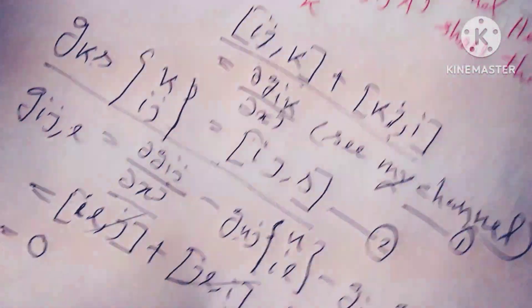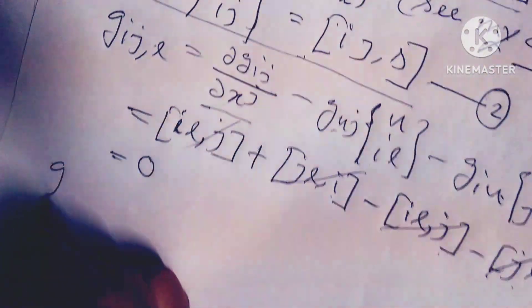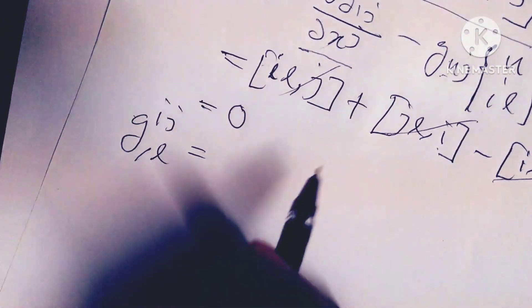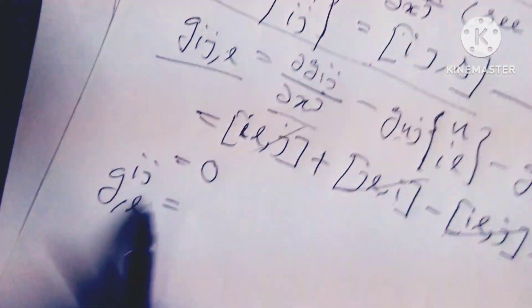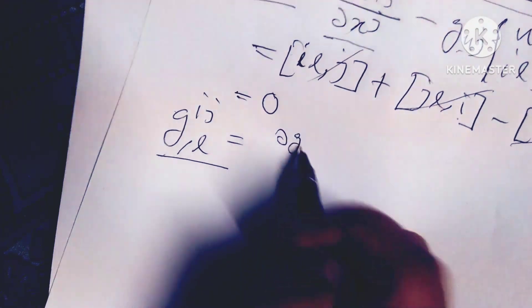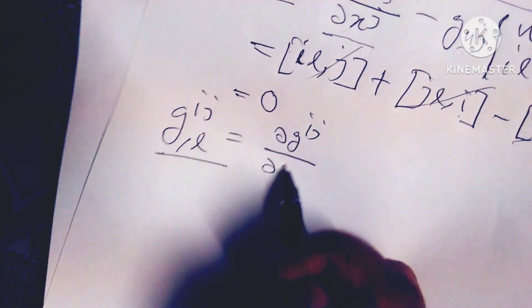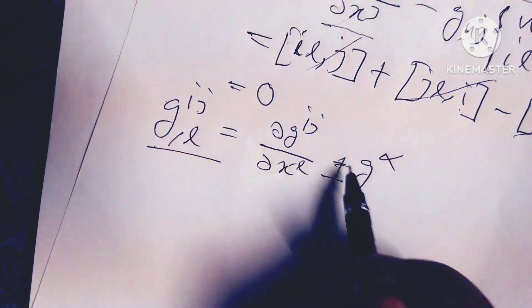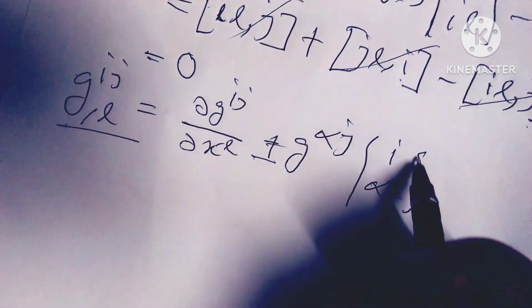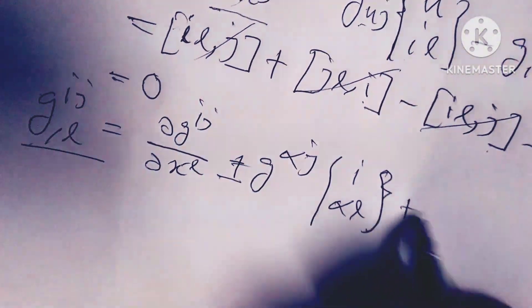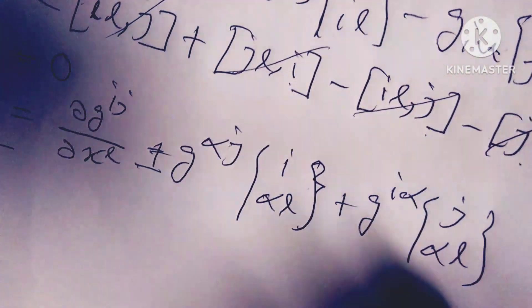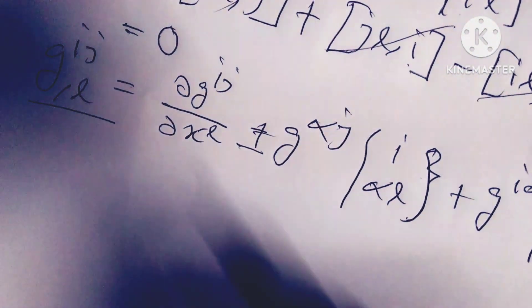Next is g^{ij}, the contravariant tensor. Its covariant differentiation gives g^{ij}_{,l} equals del g^ij divided by del x^l, plus g^{alpha j} times the Christoffel symbol of the second kind [i alpha, l], plus g^{i alpha} times [j alpha, l].